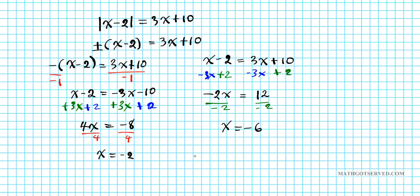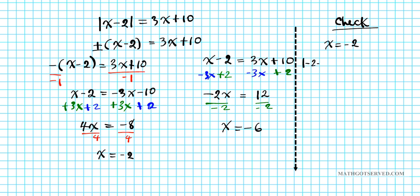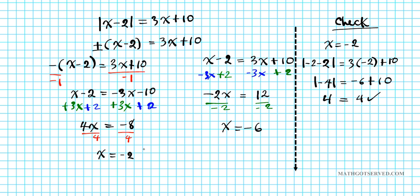We need to check both solutions. Checking x = −2: |−2 − 2| = 3(−2) + 10 → |−4| = 4 → 4 = 4. True. So x = −2 is a valid solution.